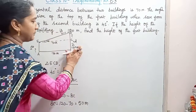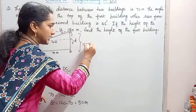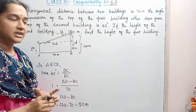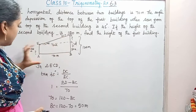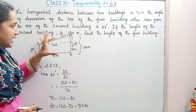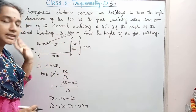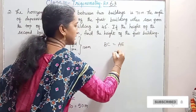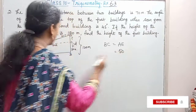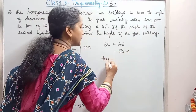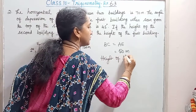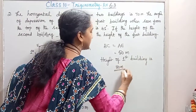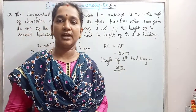So BC is 50 meters. The full height of the second building is 120 meters and BC is 50 meters, so now we can easily find CD. BC is 50 meters. The height of the first building and BC are the same height. So BC equals AE, which is 50 meters. Therefore, the height of the first building is 50 meters. This is what we were asked to find. Thank you.